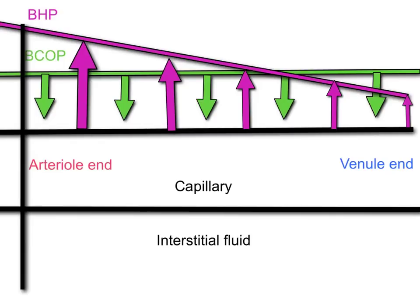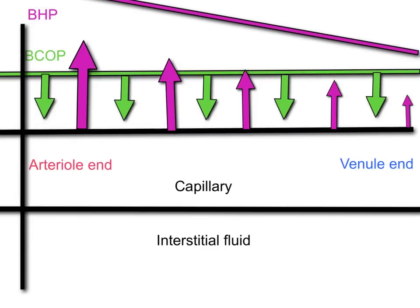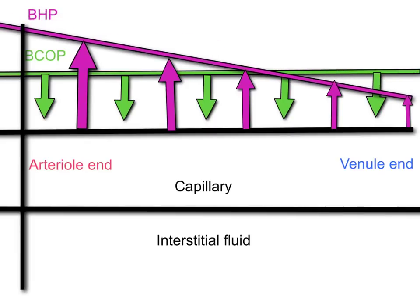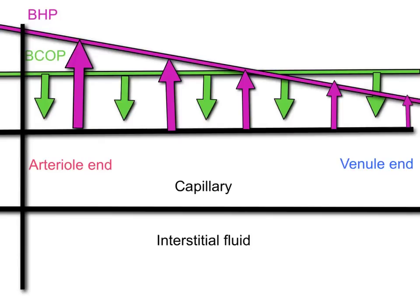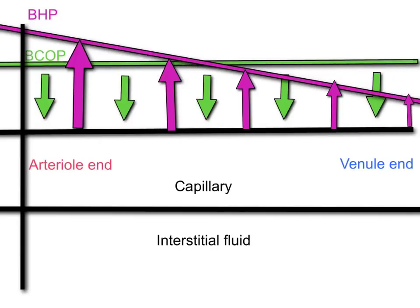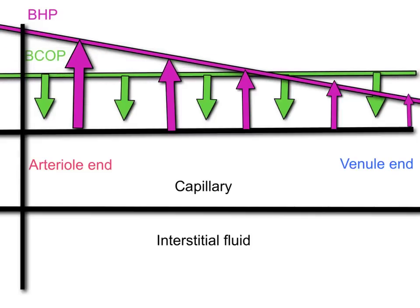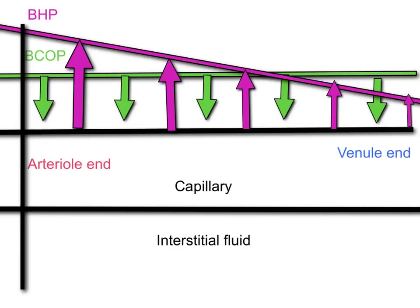Look at the blood hydrostatic pressure and you will note that the hydrostatic pressure decreases as you move away from the heart. So the arterial end is going to have a significantly higher blood hydrostatic pressure than the venule end. Blood colloid osmotic pressure, on the other hand, is relatively constant, and the inward force is not much different from the arterial end compared to the venule end.